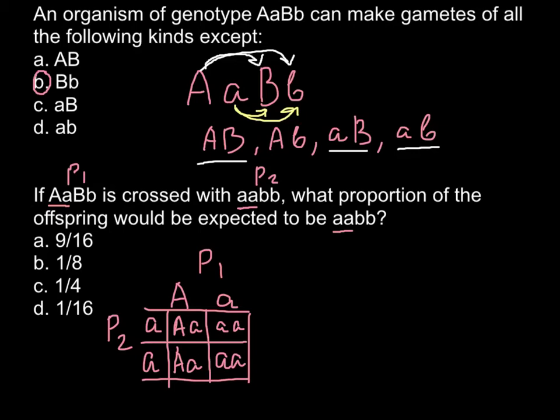We are looking for the genotype small a small a. As you can see, in this cross we would have one half — two out of four, or 50% — of offspring with the genotype small a small a. So 50% would have this genotype when we cross parent 1 and parent 2.